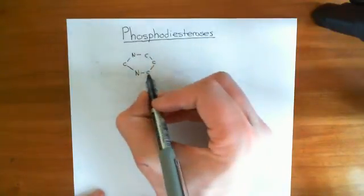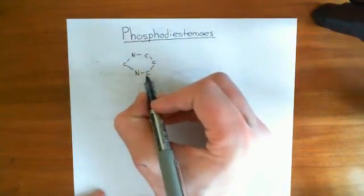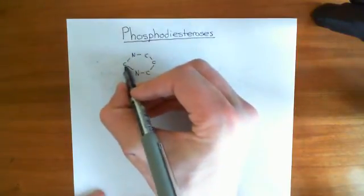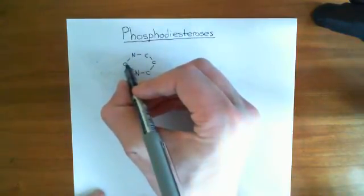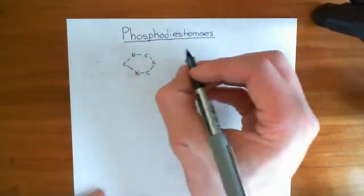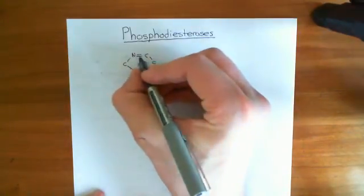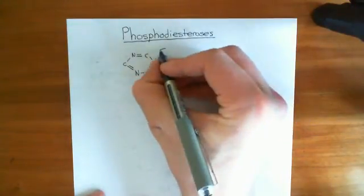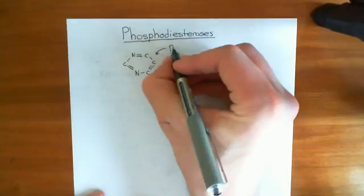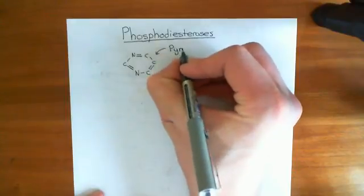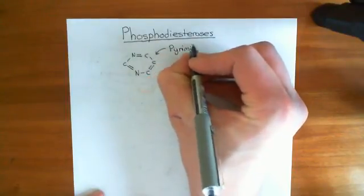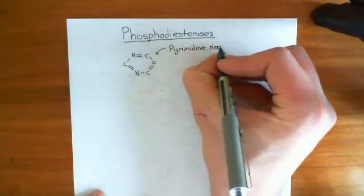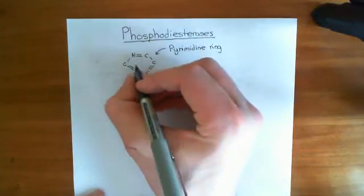For example, if I had one nitrogen here and then another nitrogen here with no carbon in between, that would not be a pyrimidine ring. Similarly, if I had a nitrogen here and another nitrogen here adjacent, that would not be a pyrimidine ring. Apart from that, it's the same as benzene — you have these alternating single and double bonds. This structure is known as a pyrimidine ring.